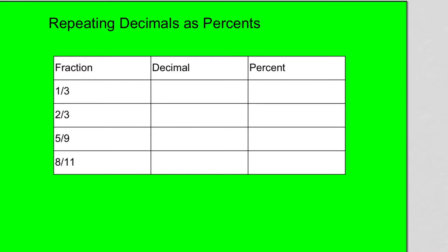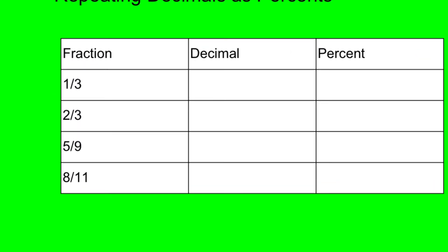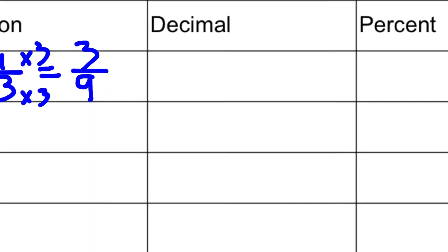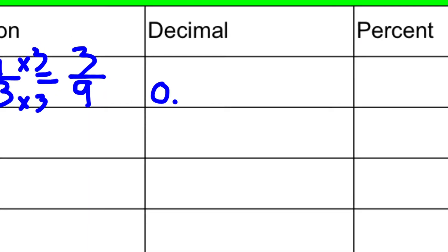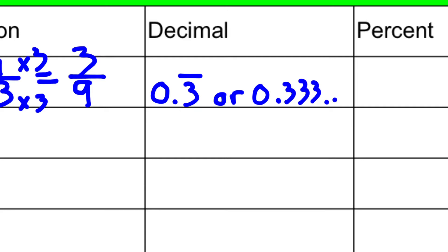I've got four common ones in this chart right here. I want to start with the fraction one-third. My hope is that you have this one memorized, but if not, you can also remember the pattern of nines. You can't make one-third out of ten, but you can make it out of nine by multiplying by three, and you get three out of nine. Three out of nine means zero and three-tenths repeating.